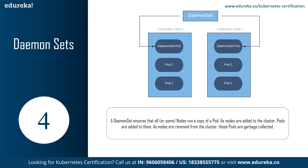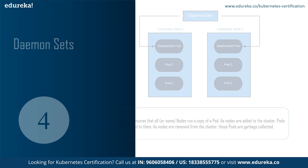Moving ahead to DaemonSet. A DaemonSet ensures that all nodes run a copy of a pod. As nodes are added to the cluster, pods are added to them; as nodes are removed from the cluster, those pods are removed and sent to the garbage collector. Deleting a DaemonSet will clear out all the pods it has created. Typical use cases include running a cluster storage daemon on every node, or running a log collection daemon on every node. A more complex setup might use multiple DaemonSets for a single type of daemon but with different flags, memory, and CPU requests for different hardware types.